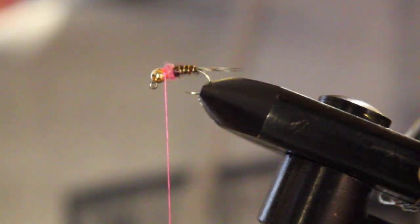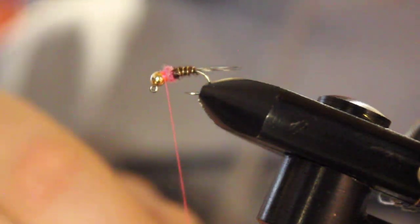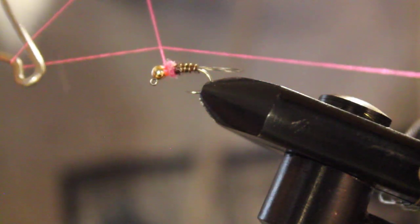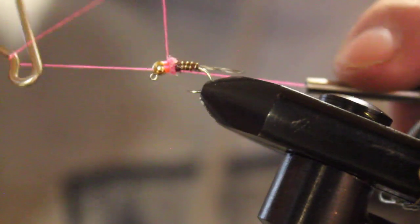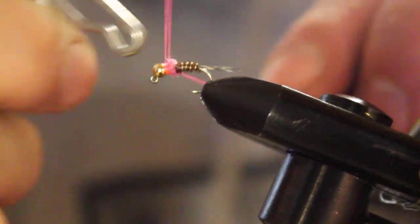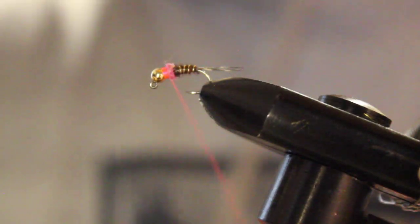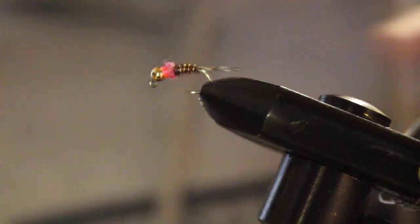Now we are going to take our whip finish. Put a couple of whips in there to finish building up that thread collar. And that is Frenchie. Thanks for watching.